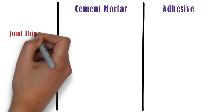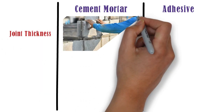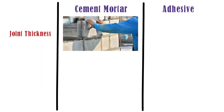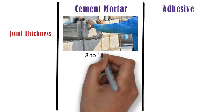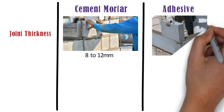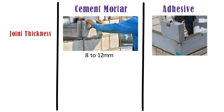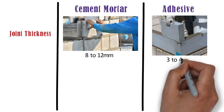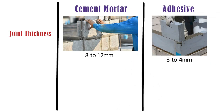Joint thickness. In case of AAC block masonry with cement mortar, the thickness of the cement mortar joint shall be 8-12 mm. Whereas, in case of AAC block masonry with adhesives, only 3-4 mm thickness of joint is sufficient.